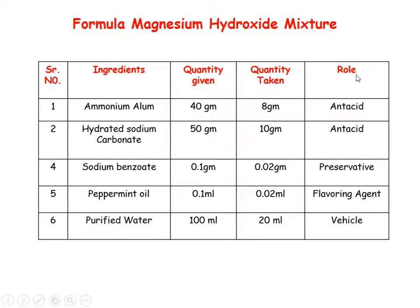Ammonium alum: calculated value 8 g — used as the antacid source. Hydrated sodium carbonate: 10 g — used as antacid reagent. Sodium benzoate: 0.02 g — used as a preservative. Peppermint oil: 0.02 ml — used as a flavoring agent. Purified water: quantity sufficient — used as the vehicle.